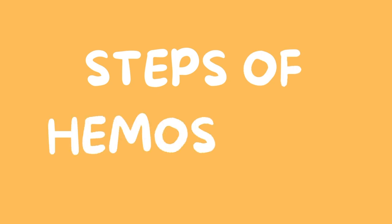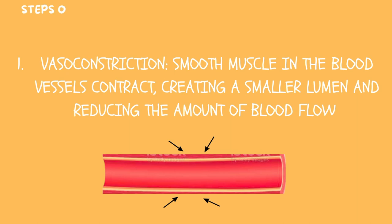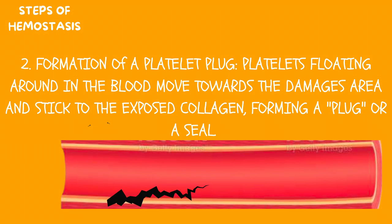So there are three steps to hemostasis. The first step is vasoconstriction. This is when platelets stimulate serotonin release and serotonin causes smooth muscle to contract. The smooth muscle will contract in the blood vessels and cause a decrease in blood flow.